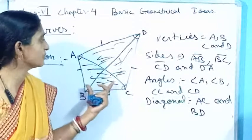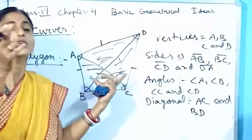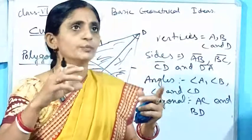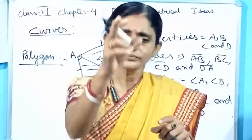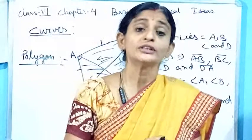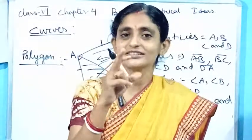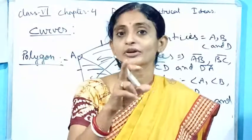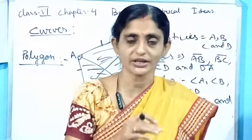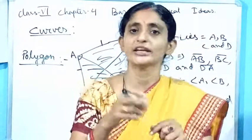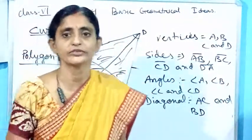Here I have taken the example of a quadrilateral, which means it is a four-sided figure. You cannot construct any figure with two sides. So the first polygon you will get is a triangle, and it is the polygon with the least number of sides — that is three sides. We will come to this in the next part. Try to solve the questions of the given exercise. Thank you.